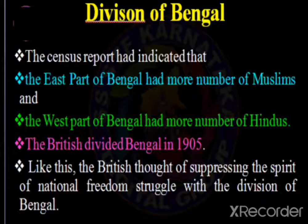The main reason was that the British wanted to stop the freedom movement and revolutionary activities, as well as the demands for independence from India. For that reason they implemented the divide and rule policy. That is the first part — the division of Bengal. The British divided Bengal in 1905.